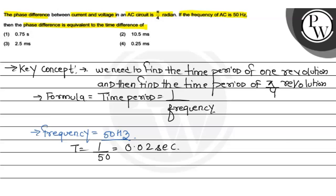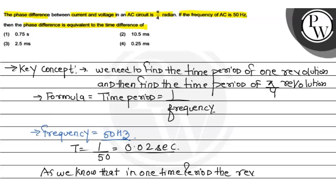As we know that if the frequency is 50 Hz and the time period is 0.02 second, in one time period the revolution is 2π.